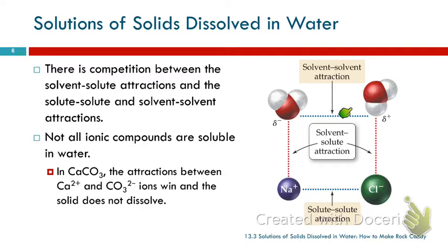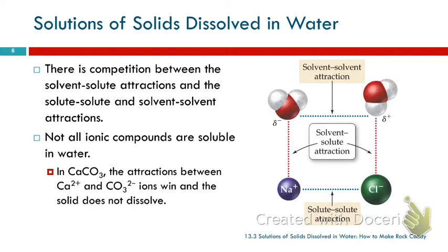Water molecules really like each other — they have hydrogen bonding, they're really tight with each other. Sodium and chloride have ionic bonding and they're really tight with each other too. So they're not going to want to separate unless you give them something else they really like. Sodium ions and water have ion-dipole forces, which are quite strong. Chloride and water also have ion-dipole forces, so the sodium and chloride are willing to separate. The water molecules are willing to spread out and let them in because even though they break these attractions, the new attractions formed are similar in strength.